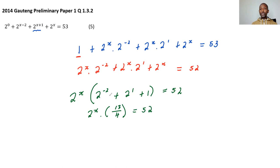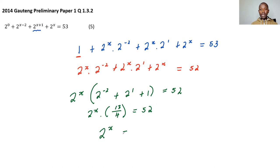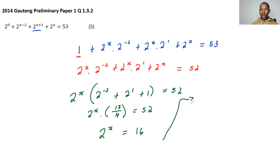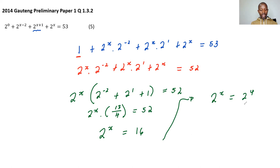Dividing both sides by 13 over 4: 2 to the power x equals 52 divided by 13 over 4, which gives 16. Changing 16 to a base of 2 using the calculator gives 2 to the power 4. Bases are the same, so drop the powers: x equals 4. A student asked how we got 13 over 4 - it's simply 2 to the power negative 2 plus 2 to the power 1 plus 1 evaluated in the calculator.